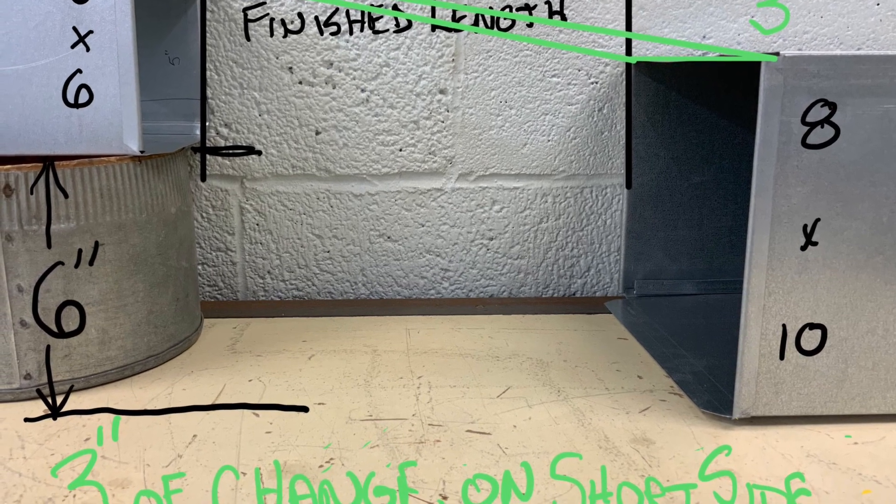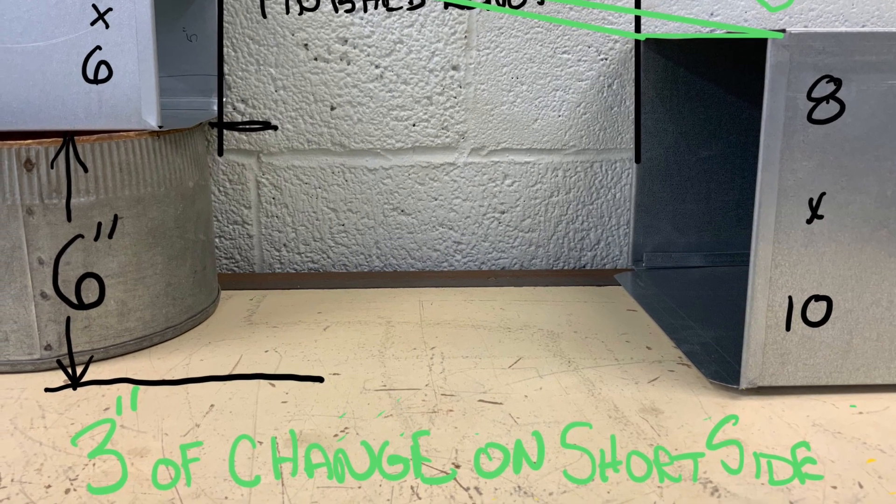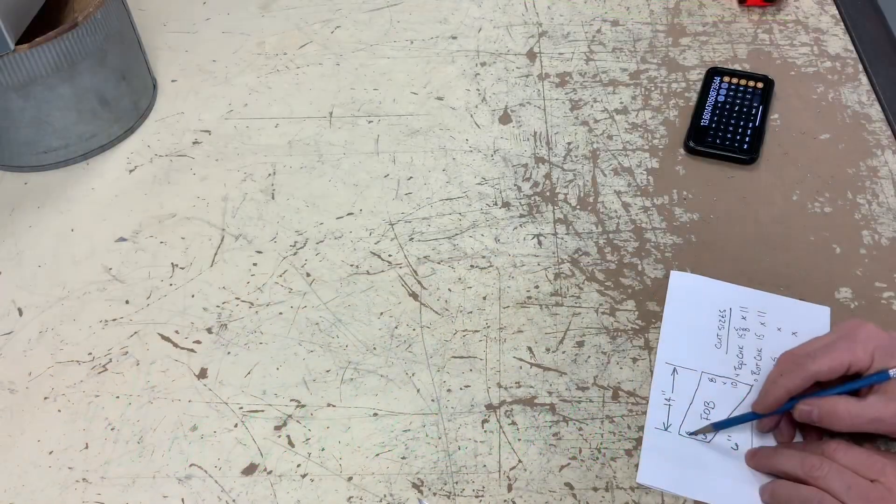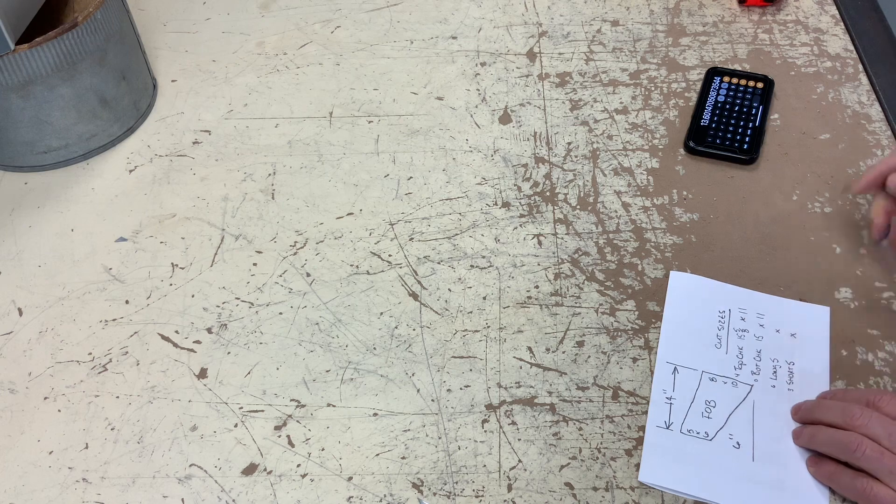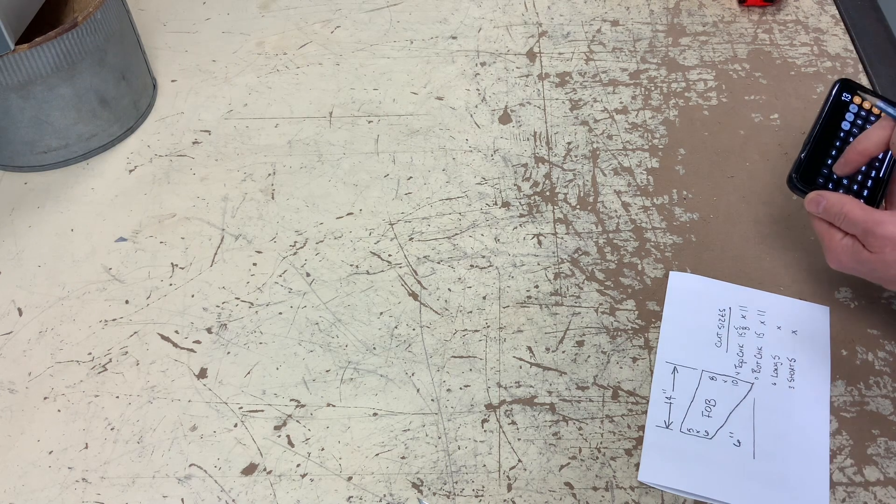And the other one is the short side. It has a three inch slope. There are four pieces to this fitting.